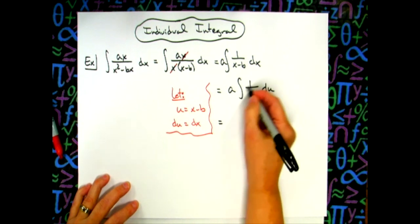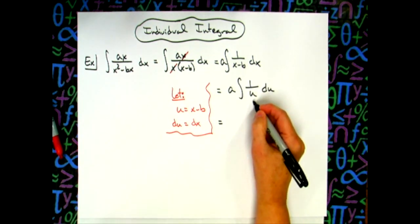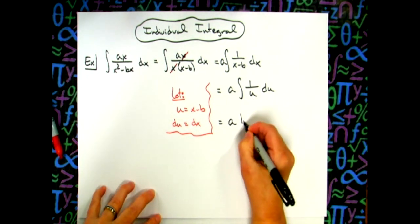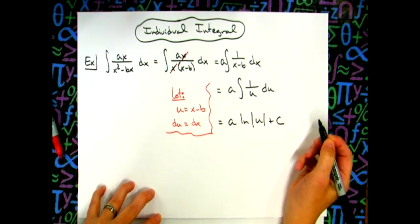We all should have memorized at this point that the integral of one over u is natural log absolute value of u. So we'll have a natural log absolute value of u, and then plus c, because I've integrated.